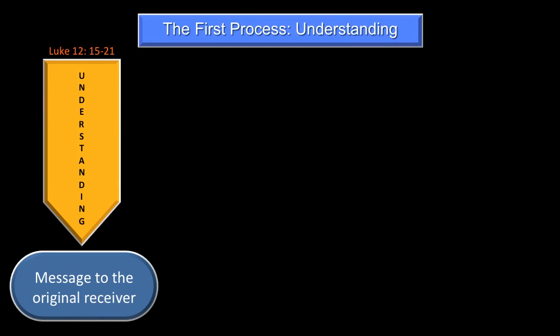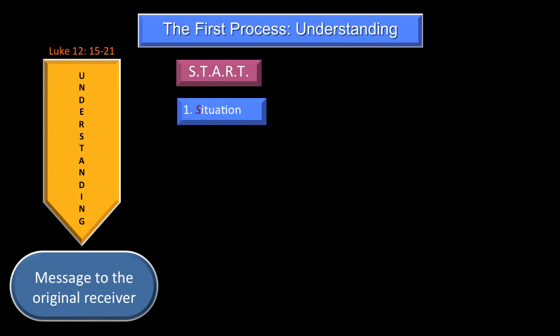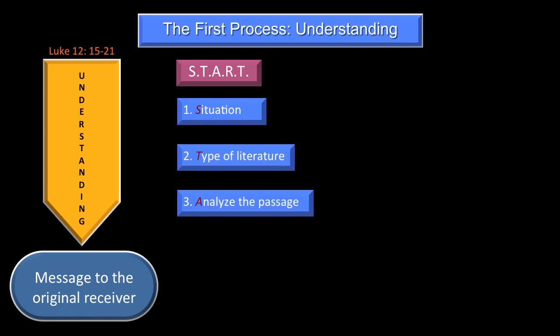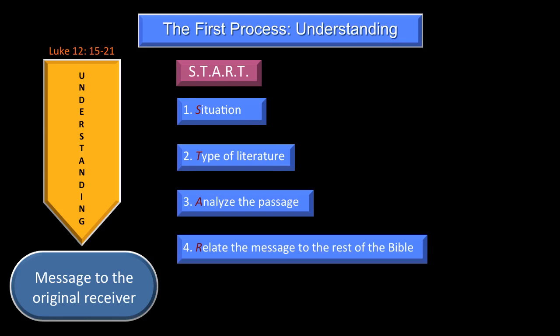Let us begin with the first process of understanding, applied on Luke 12, verses 15 to 21. To get to the message to the original receiver, we use the acronym START. S is situation; T is the type of literature. Third, we analyze the passage; then we relate the message to the rest of the Bible; and finally, we test our findings.